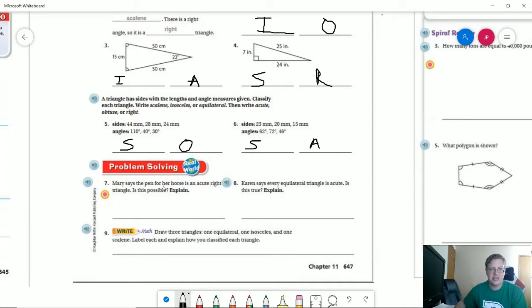Number seven, Mary says the pen for her horse is an acute right triangle. Is that possible? Well, to be an acute triangle, we have to have all three measures for our angles under 90 degrees. So if I have a right angle, I have a right triangle. Now, if I have a 90 degree angle, my other two angles are acute, but that does not mean that this term here would be correct. So no, and it would just be a right triangle.